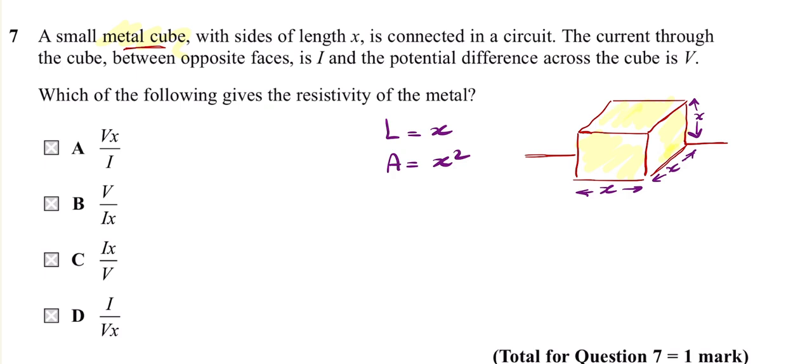The examiner said sides of length x, so I have x and x and x connected in the circuit. The current through the cube between the opposite faces is I, and the potential difference is V.